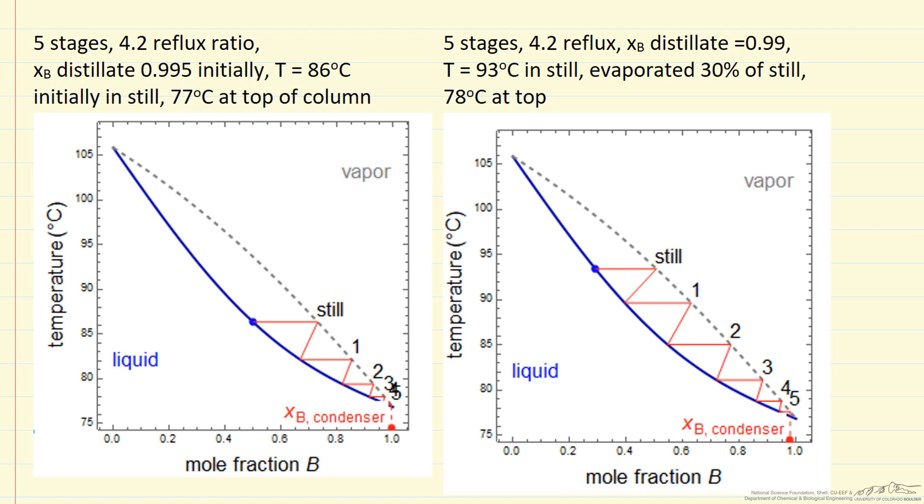And the stages are counted off by referring to the Y-X diagram and the operating line there. The point that's important here is this is a case with five stages and the temperature is 86 degrees in the still when we start, but it's only 77 degrees at the top of the column.